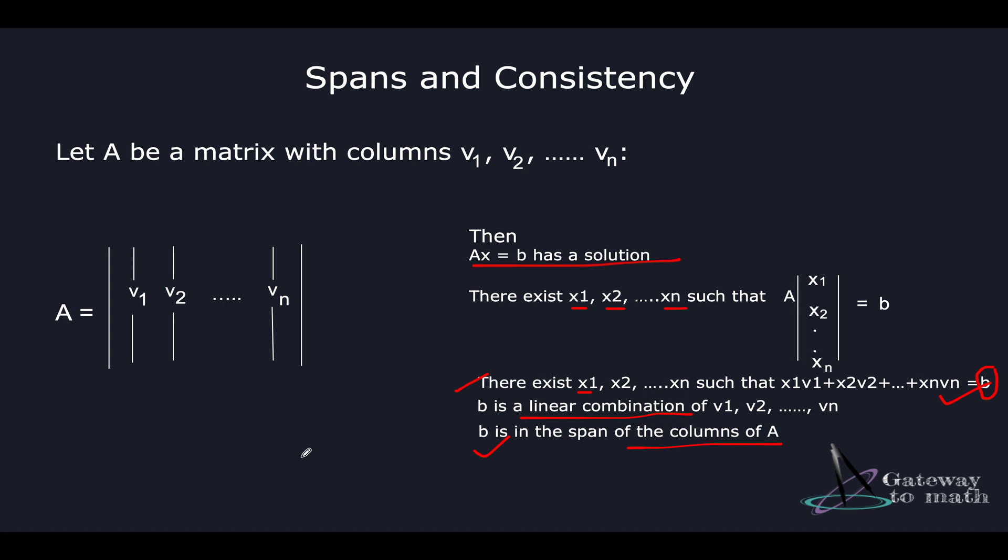We've seen how we define span - when we have linear combinations of vectors together, which gives us a resultant vector, then we say the vectors are in span. We discussed this in the previous session. I'll link the URL in the description box.